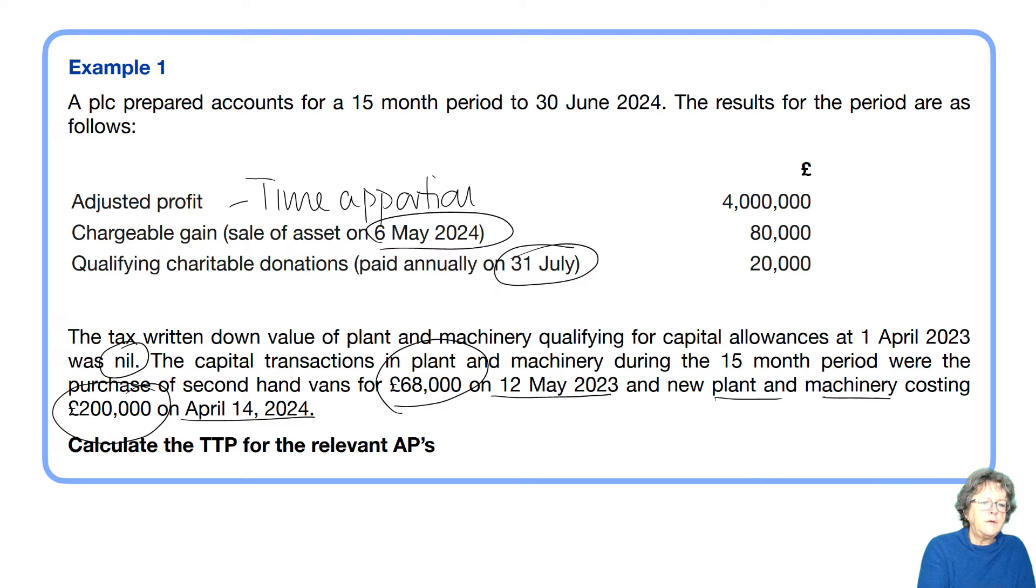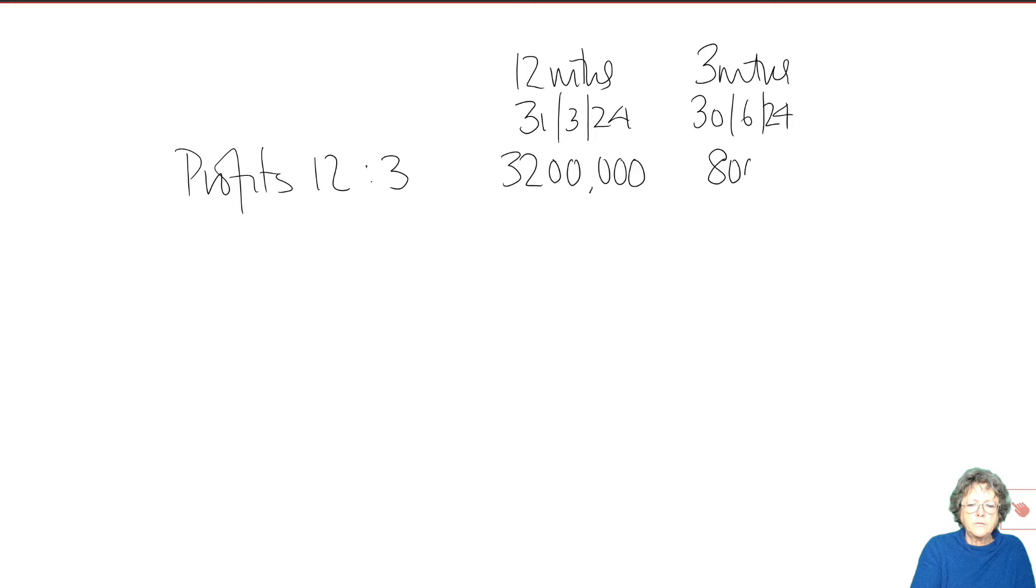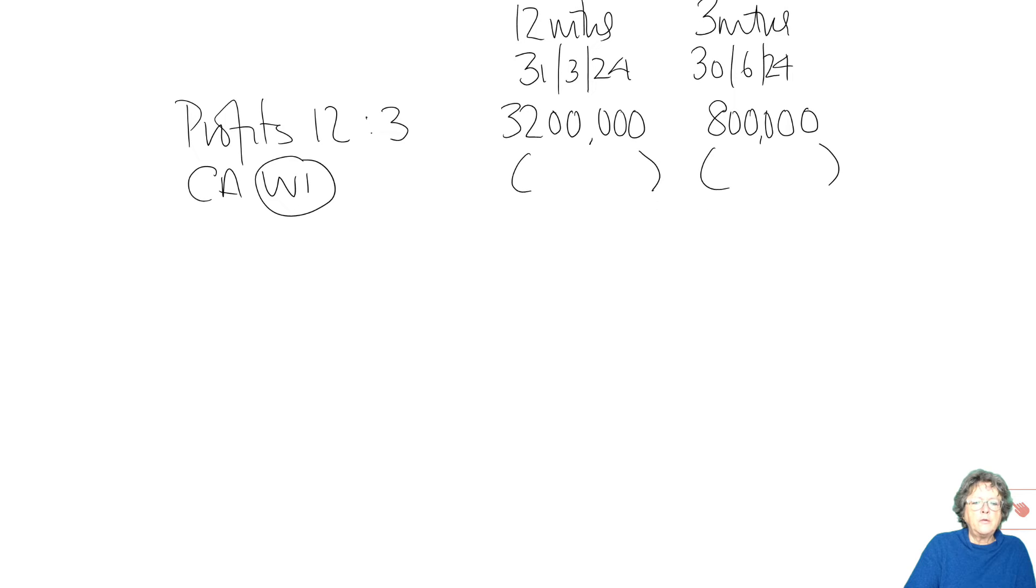So let's see how that looks if we put it into a computation. So what we need to do is we need to split the computation, always 12 months first, which will be to the year ended 31st of March 24 and then the three months to the 30th of June 24. Now the profits of 4 million will be pro-rated and time apportioned. Capital allowances which will be deducted. We're going to work those out in a minute and as always I'm setting up my pro forma and doing the nice easy bits first and getting as many marks as I can.